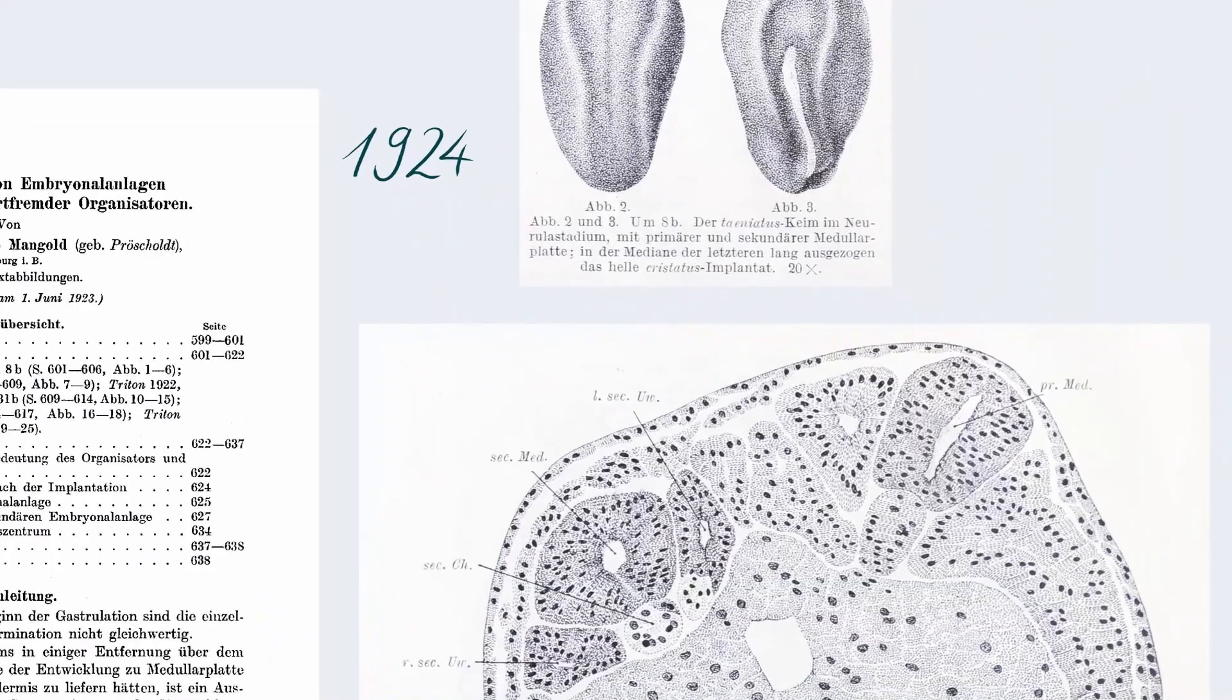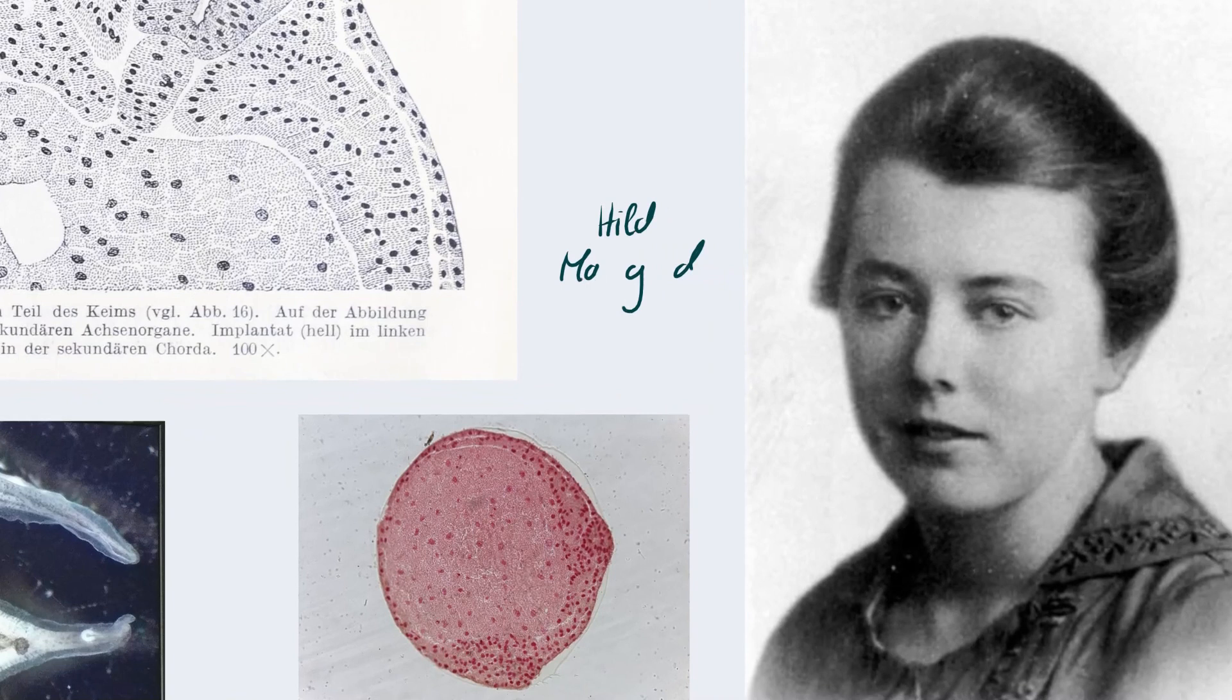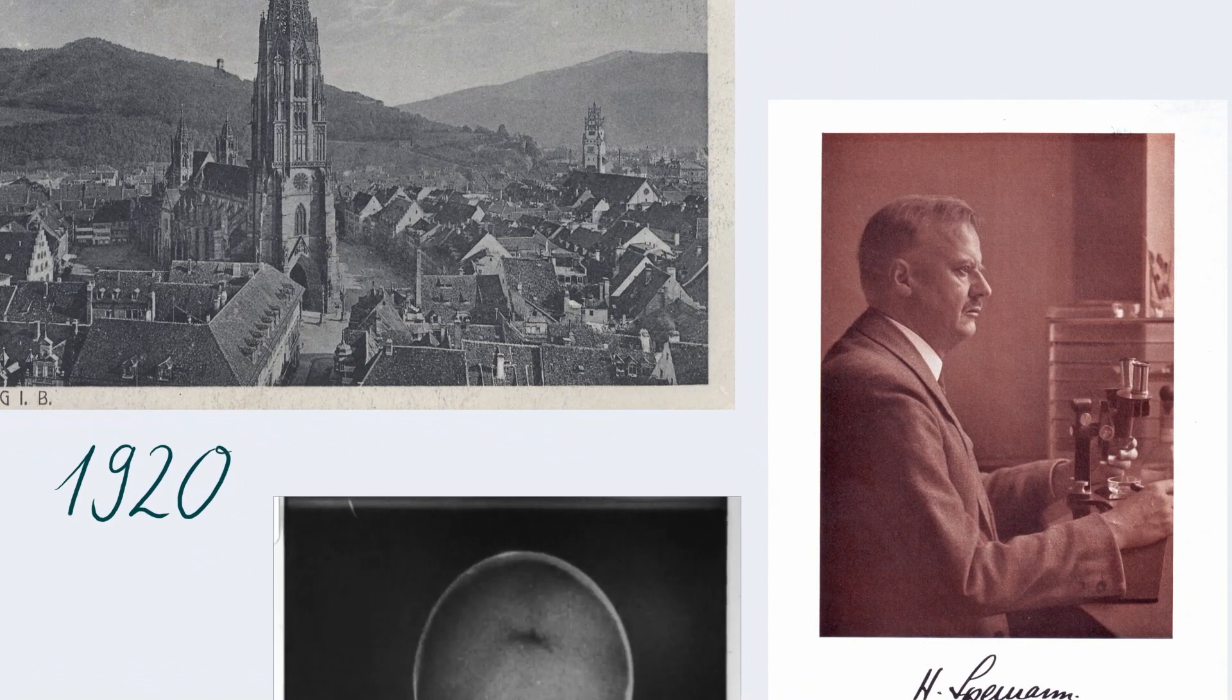The discovery of the organizer in 1924 has since made a huge impact on biological research. It was made at a time when biologists were just beginning to unravel the inner workings of cells and organisms. The woman who had discovered the organizer was Hilde Mangold. She came to Freiburg in 1920 to work in the laboratory of Hans Spemann. Like him, she was driven by a will to understand the processes inside a developing embryo.